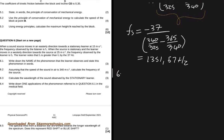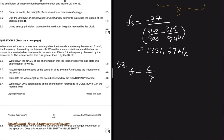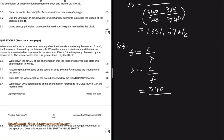Question 6.3 asks us to calculate the wavelength of the sound observed by the stationary listener. We know frequency equals speed divided by wavelength, so wavelength equals speed divided by frequency. The speed of sound in air is 340 meters per second, and the frequency is what we just calculated: 1351.57 hertz. This gives a wavelength of 0.252 meters.